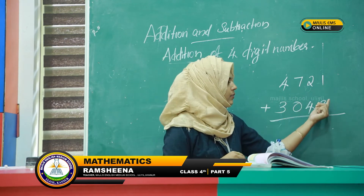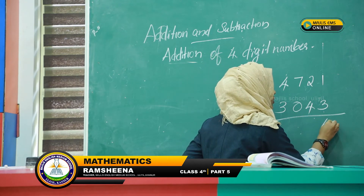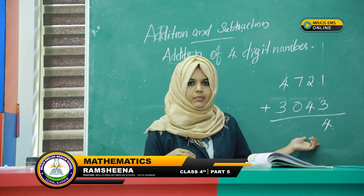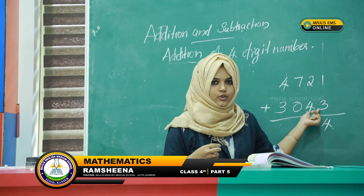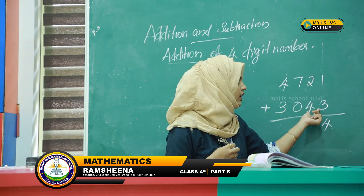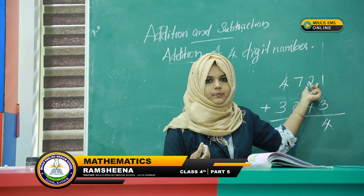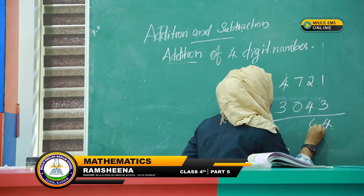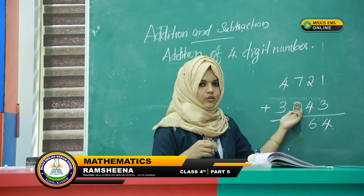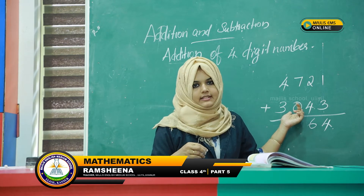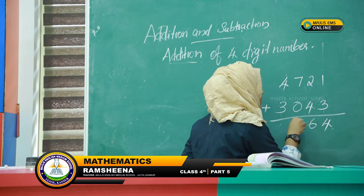We add 1 plus 3. 1 plus 3 is equal to 4. Then 2 plus 4 is equal to 6. Then 7 plus 0 — the answer is 7.